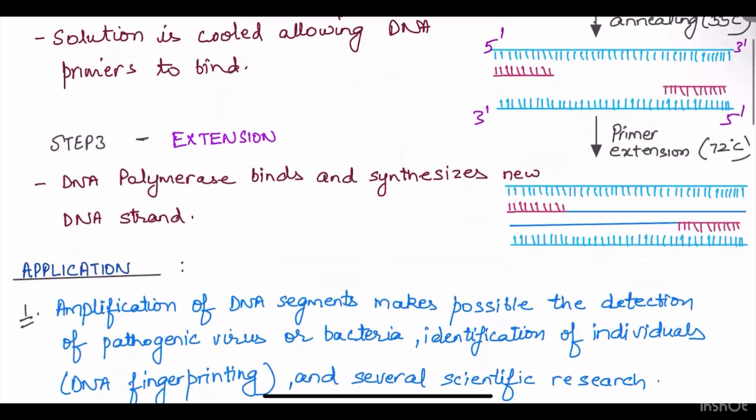Third step, extension or elongation. At this step, the temperature is raised to 72 degrees and the bases are added to the 3' end of the primer by Taq polymerase enzyme.